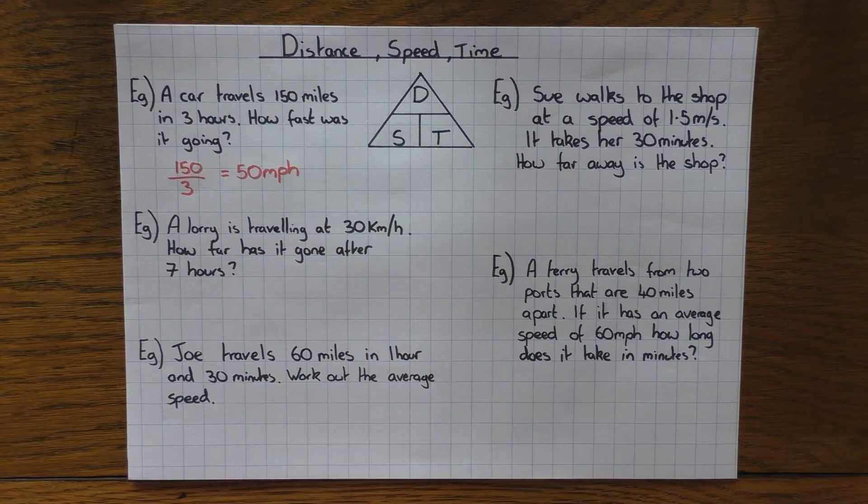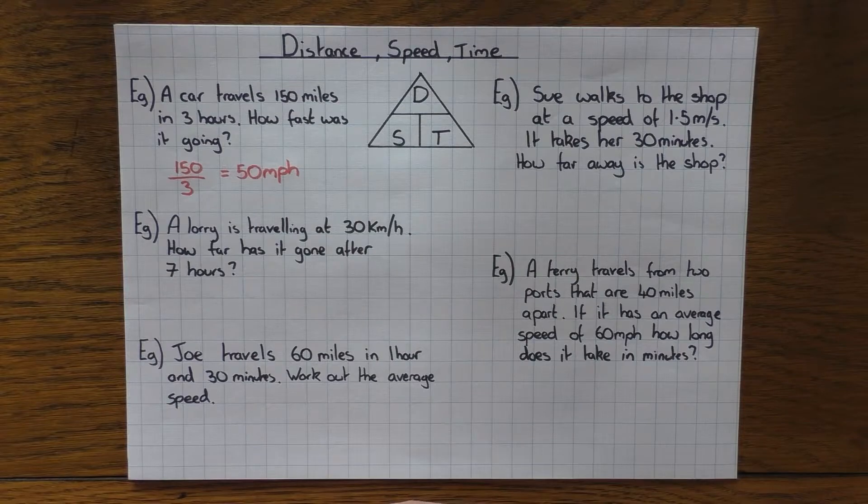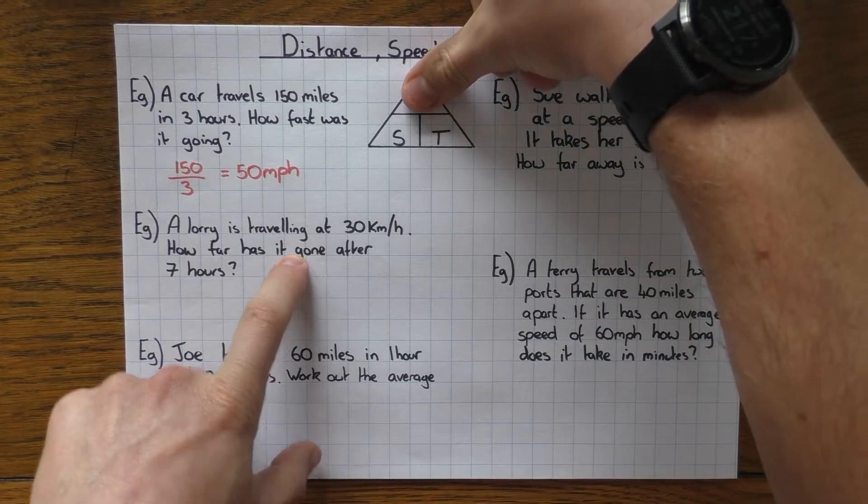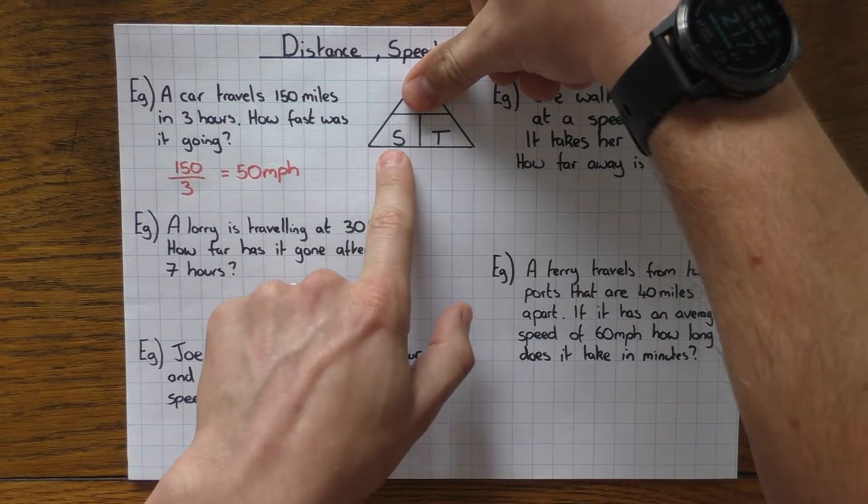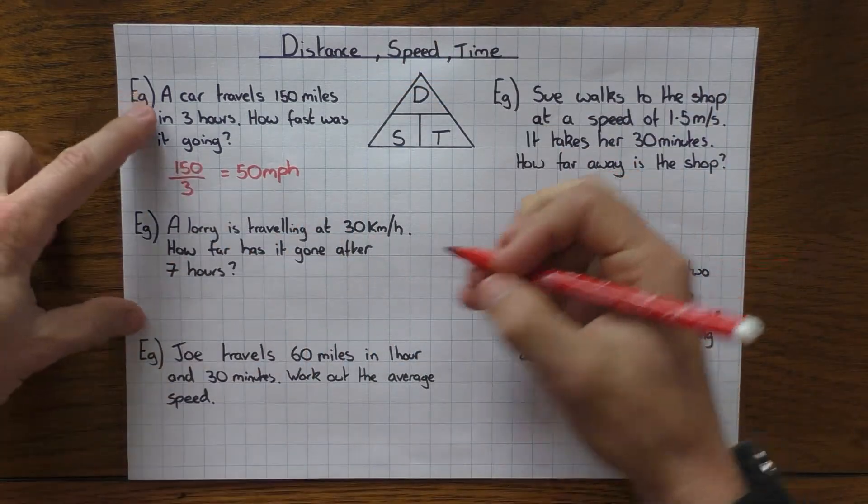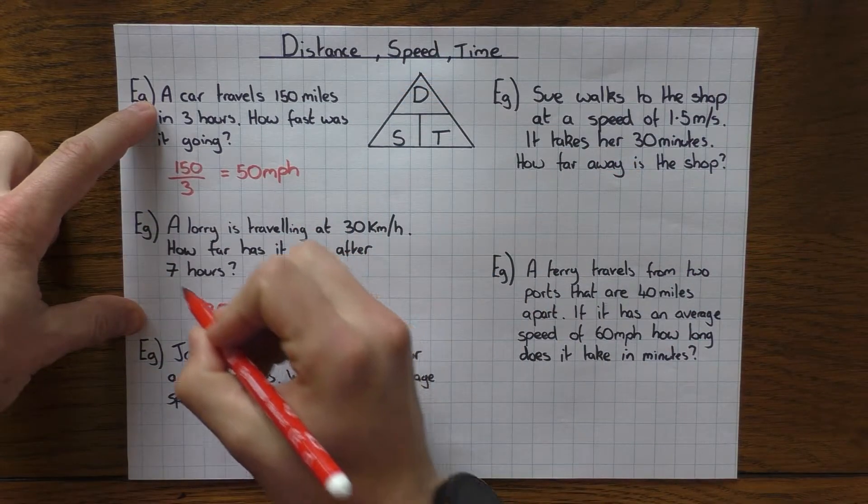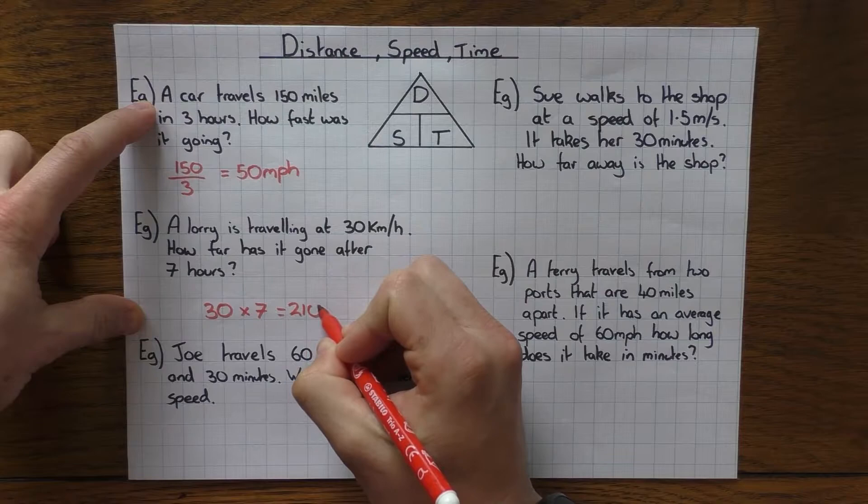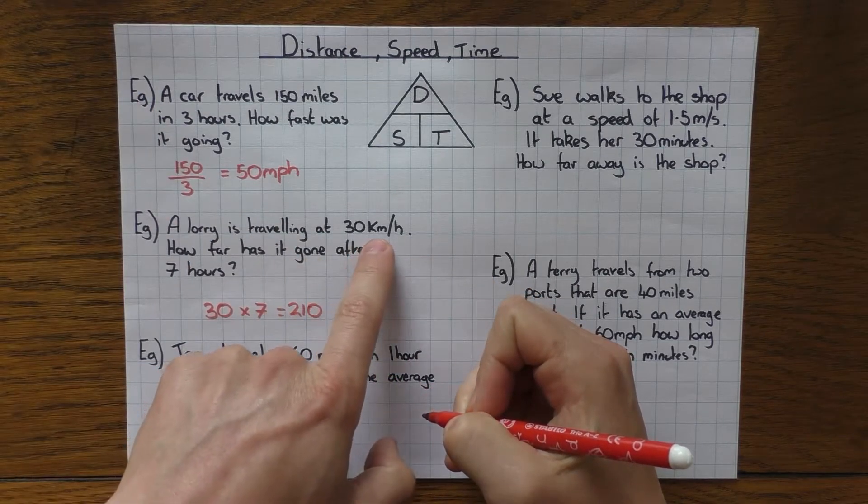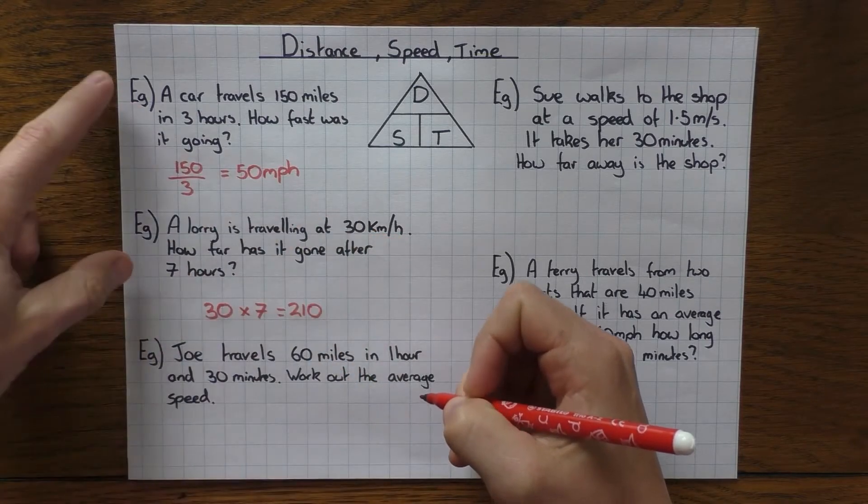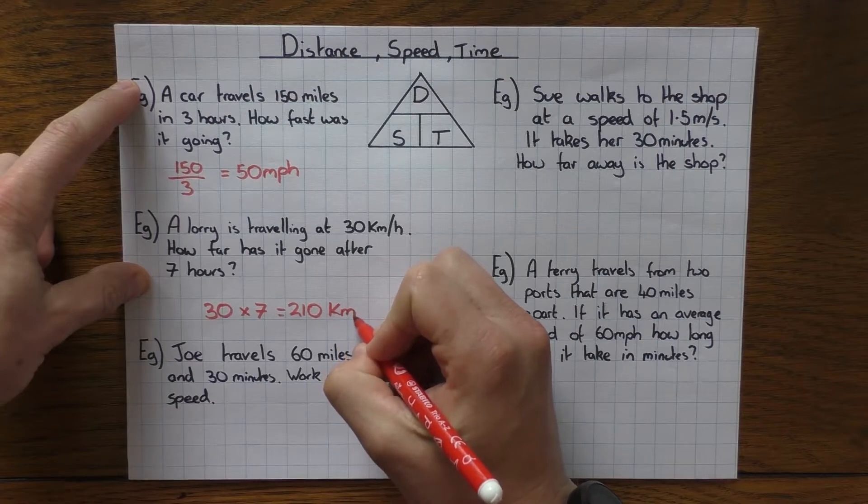The next one, a lorry is traveling at 30 kilometers per hour, so we have the speed. How far has it gone? So I want the distance after seven hours. So I go to my triangle and I cover up the distance because that's what I'm after and it tells me I need to do speed times the time. So the speed was 30 kilometers per hour. The time was seven. So 30 times seven is 210. That's the distance. I go to the speed to find out what the units are for the distance. It was kilometers per hour. So the distance is in kilometers.